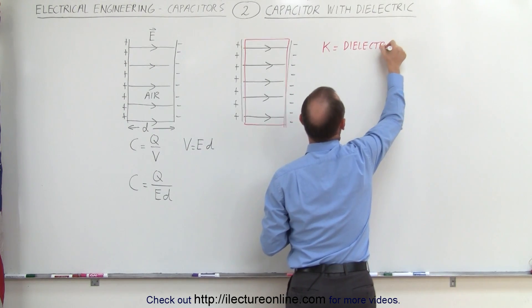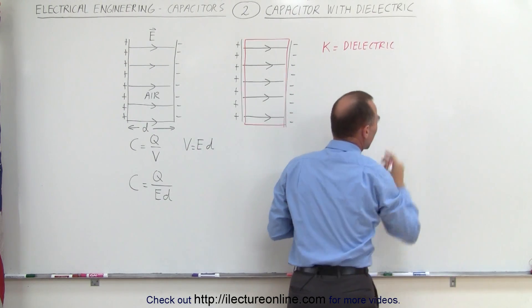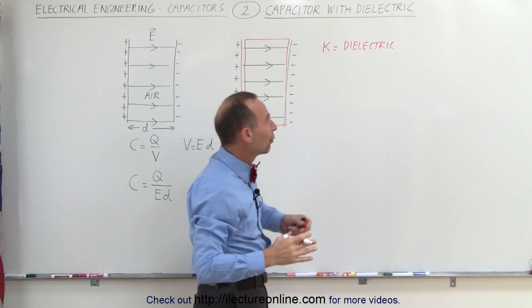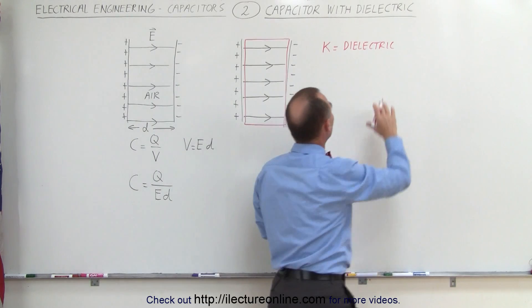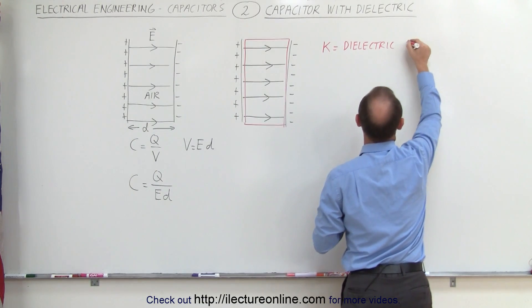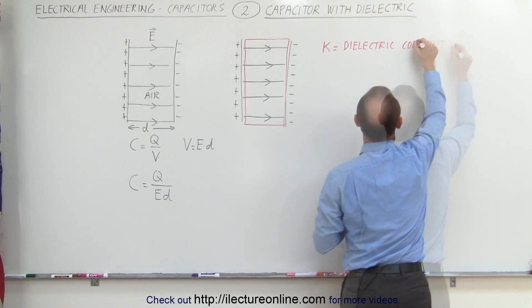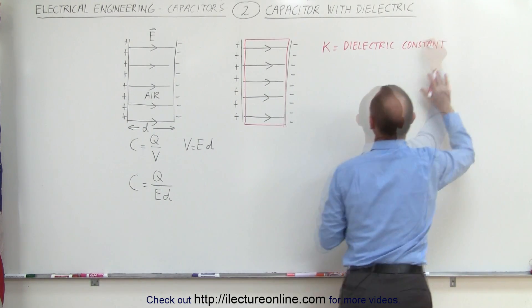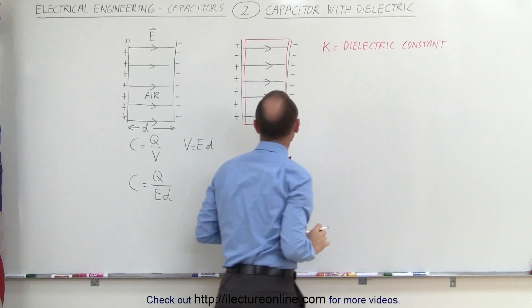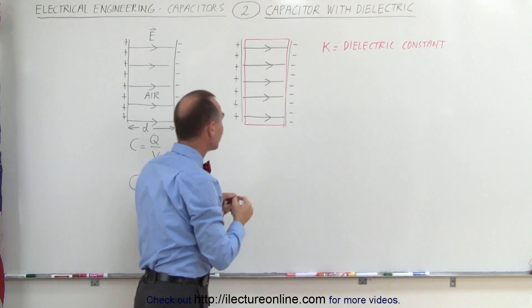Typically K is a number between 1 and 5 — that is the typical range for the dielectric constant — and it is denoted by the letter K.